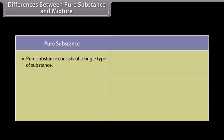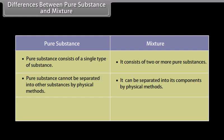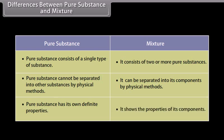Differences between pure substances and mixtures. A pure substance consists of a single type of substance, whereas a mixture consists of two or more pure substances. A pure substance cannot be separated into other substances by physical methods, but mixtures can be separated into their components by physical methods. A pure substance has its own definite properties, while a mixture shows the properties of its components.